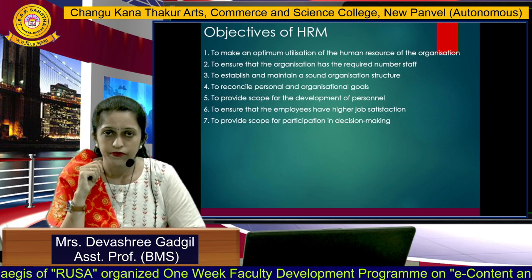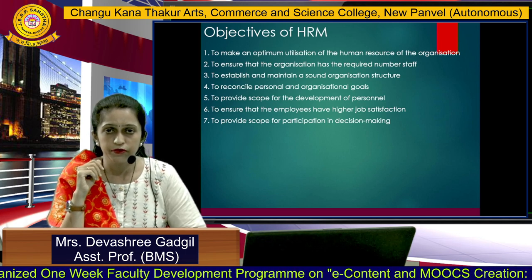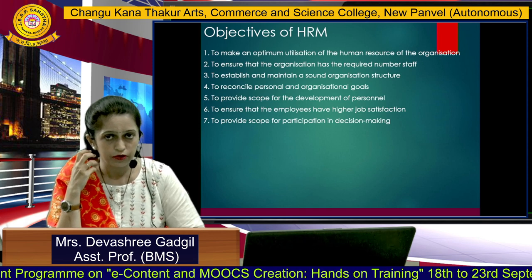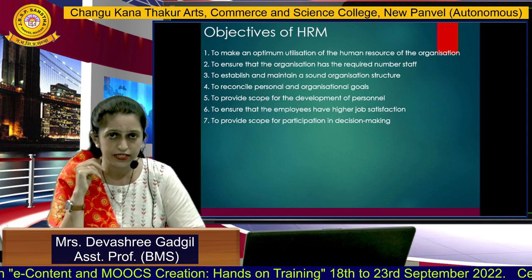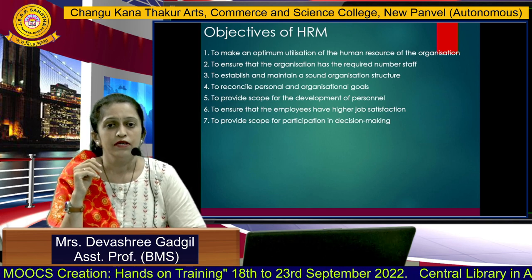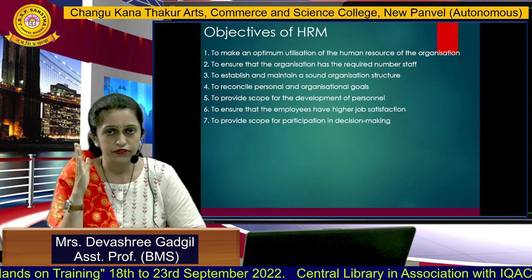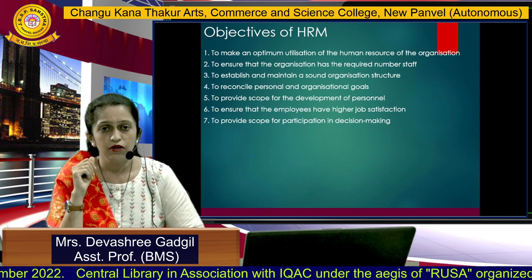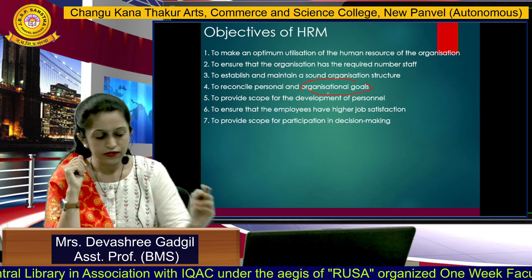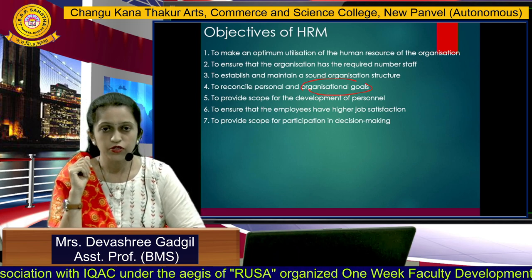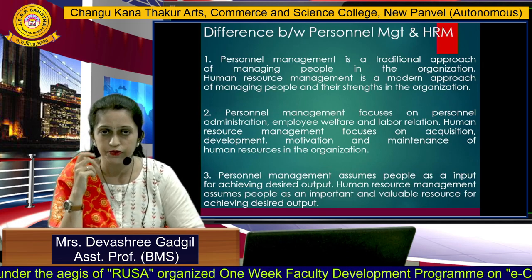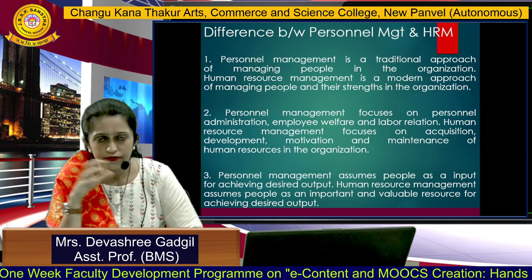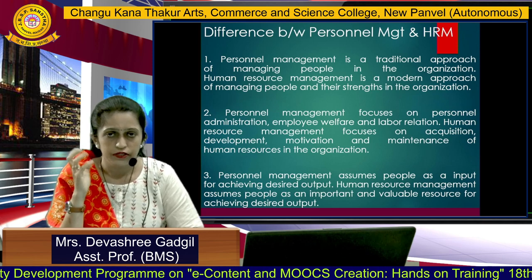The objectives of human resource management: the first basic objective is the optimum utilization of human resources. Second is determining how many human resources — the number of staff — are required in the organization, which is HR planning. Third is to establish and maintain a sound organization structure. Fourth is to reconcile personal and organizational goals, because everything we do is for achieving the organization's objectives. There are two aspects in HRM: personal management and human resource management, and there is often confusion between the two.